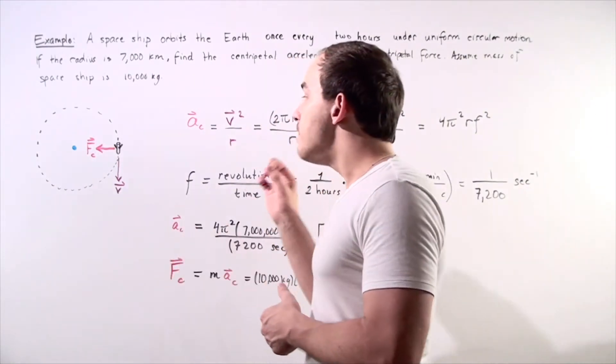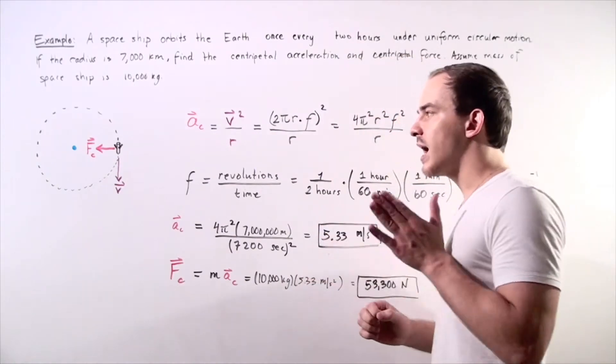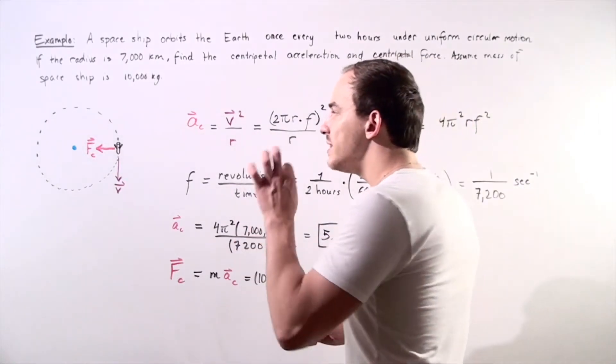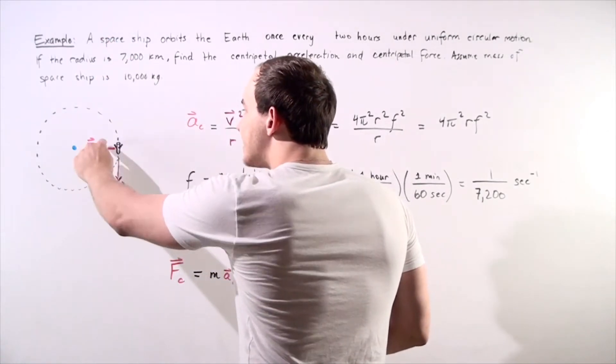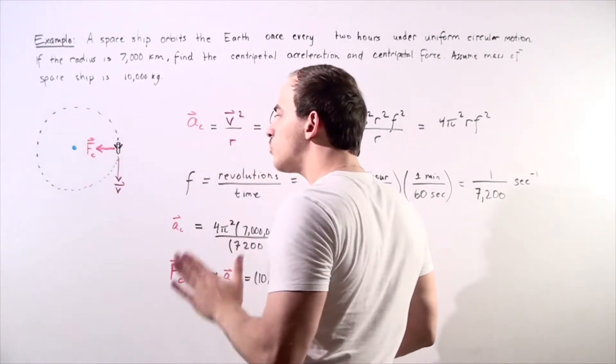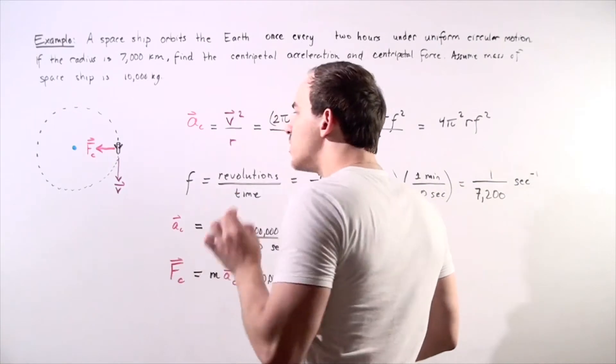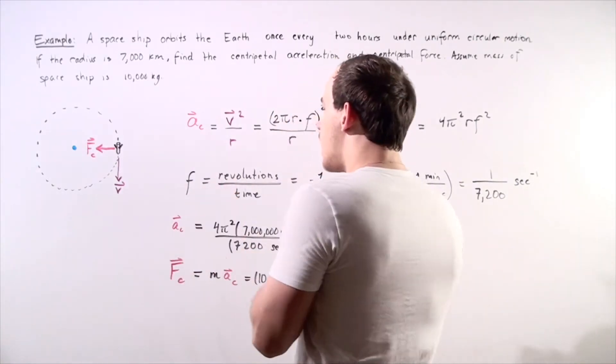It means, A, that our magnitude of velocity remains constant, and B, the net force acting on the object on our spaceship acts at a 90 degree angle with respect to the velocity, with respect to the motion of the object.